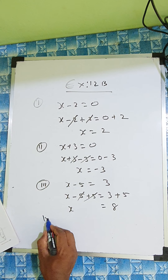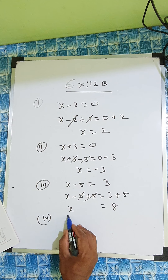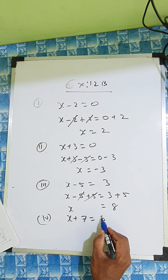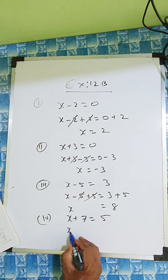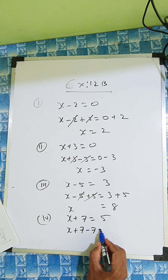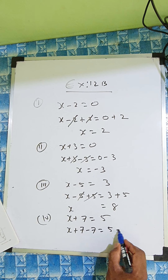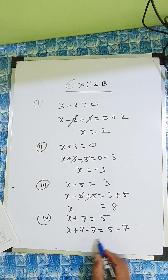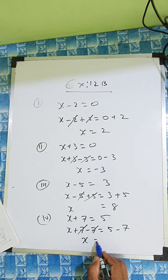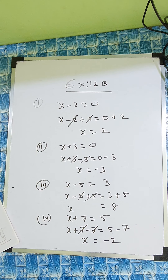One more we'll do. x plus 7 equal to 5. So we write here x plus 7 minus 7, and 5 minus 7. So these two will cancel, x equal to 5 minus 7 is minus 2.